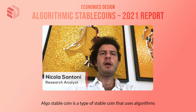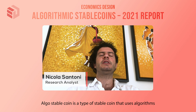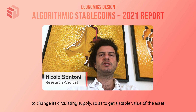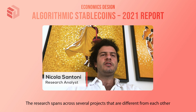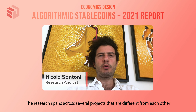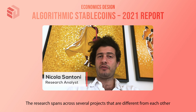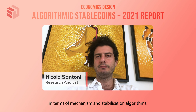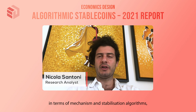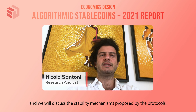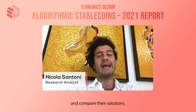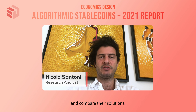An algorithmic stablecoin is a type of stablecoin that uses algorithms to change its circulating supply so as to get a stable value of the asset. The research spans across several projects that differ from each other in terms of mechanism and stabilization algorithms, and we will discuss the stability mechanism proposed by each protocol and compare their solutions.